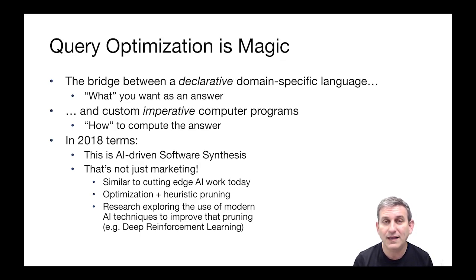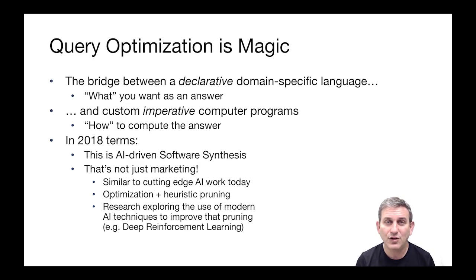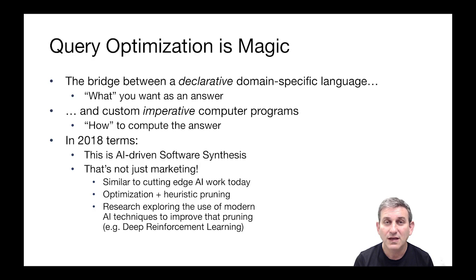There is modern research going on even today in our group here at Berkeley on using the latest AI techniques to improve query optimization — for example, using deep reinforcement learning as the heuristic way to search the plan space. We won't learn about the cutting-edge research today; we'll learn about the foundations, but it's certainly enough to get you thinking about how to use modern AI to make query optimization even more efficient and effective.